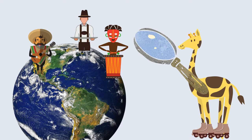For G, this represents three subjects. The giraffe in this image has roller skates on for recreation. He's got a magnifying glass to study the geography of the globe, and while studying the geography, he's also studying anthropology — the cultural groups represented by the symbols on top of the globe.